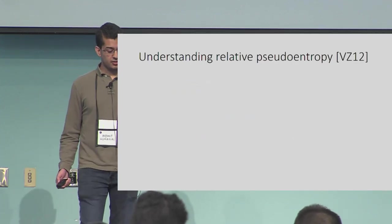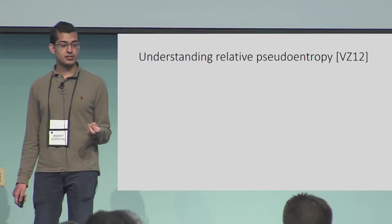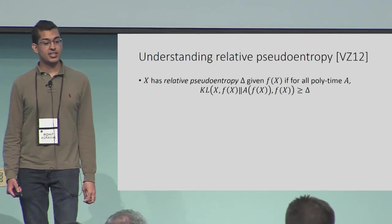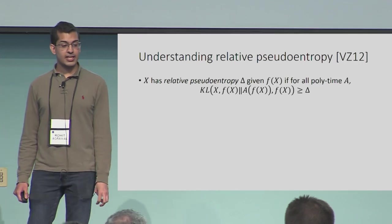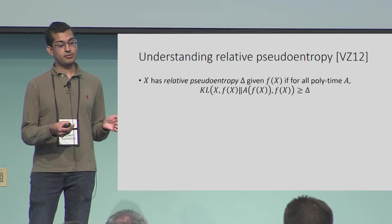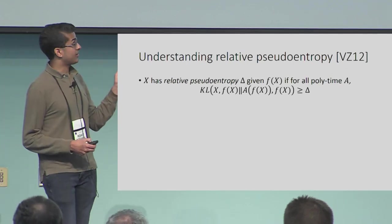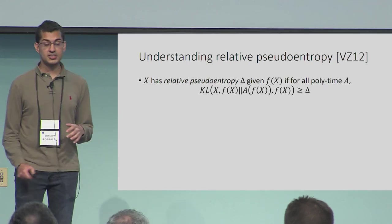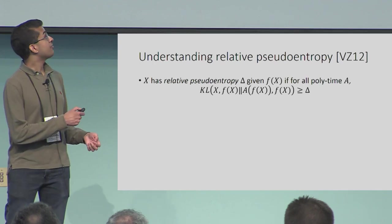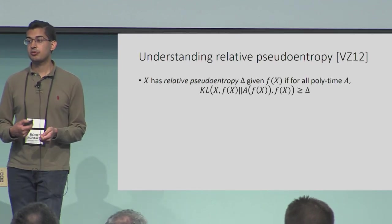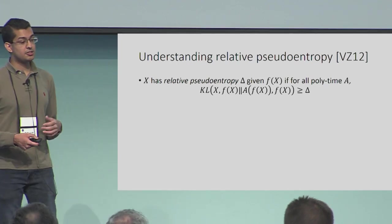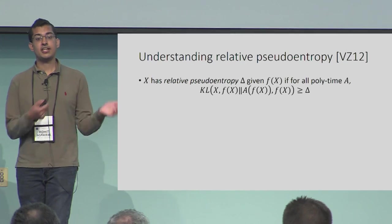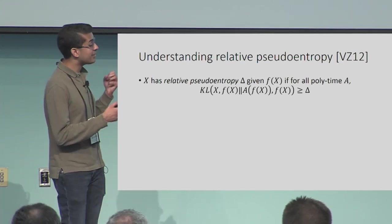Before introducing hardness in relative entropy, let's understand the Vadhan-Zheng notion of relative pseudo-entropy used for pseudo-entropy generators. We say a distribution X has relative pseudo-entropy delta given f(X) if, for all polynomial time adversaries A, the relative entropy of the joint distribution of the input X and image f(X) with respect to the adversary run on f(X) and f(X) is at least delta. This divergence is made zero if the adversary A samples exactly from the pre-image distribution of X given f(X). The relative entropy will be large if A puts mass outside the pre-image of f, or if A fails to invert f.